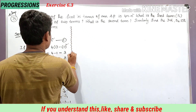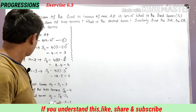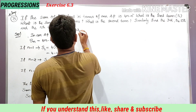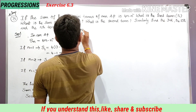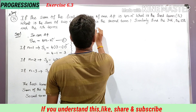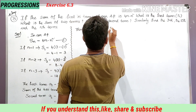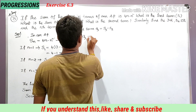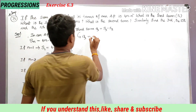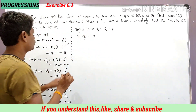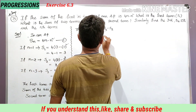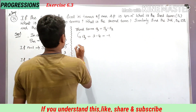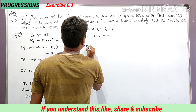The third term a3 = S3 − S2 = 3 − 4 = −1. So the third term is −1.